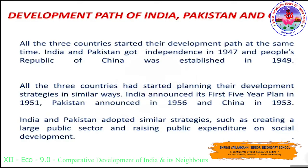All three countries started their development path at the same time. India and Pakistan got independence in 1947 and the People's Republic of China was established in 1949. All three countries started planning their development strategies in similar ways. India announced its first five-year plan in 1951, Pakistan in 1956, and China in 1953. India and Pakistan adopted similar strategies such as creating a large public sector and rising public expenditure on social development.